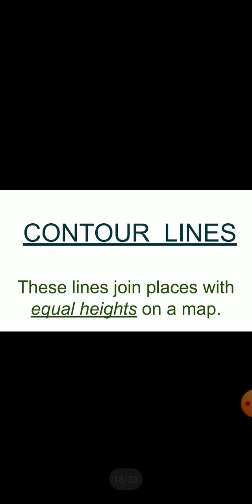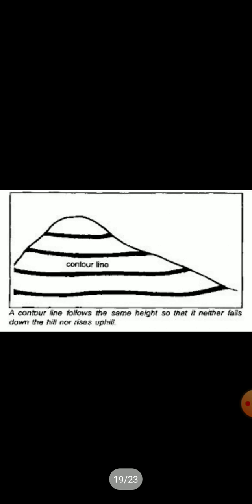These lines join places with equal heights on the map. Counter lines are shown in irregular shapes depending upon the landforms. These lines cannot cut each other.